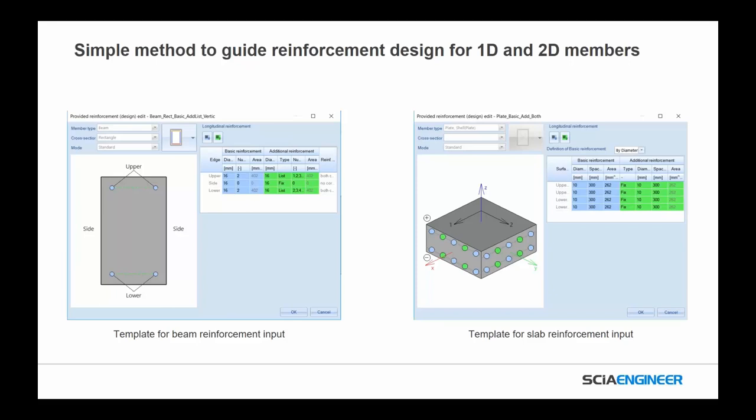We now have a much more simplified method to guide reinforcement design in both 1D and 2D members — new templates and interfaces to allow you to add upper and lower reinforcement in 1D members. You can save these templates for beam reinforcements and continue to use them, and set ones for columns, plate ribs, and so on. All of this goes to allowing you, in a much simpler and clearer fashion, to define what you need to put on your model so that information can be communicated in design and into the engineering report.